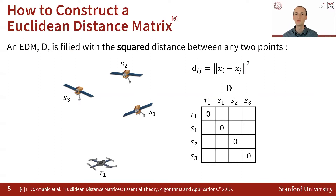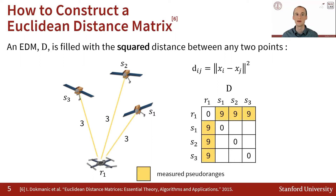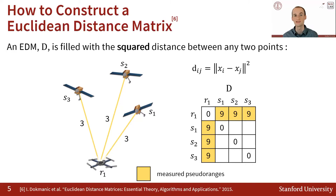First, we can fill in the diagonal with zeros, representing the fact that the distance is zero between any point and itself. We can fill in the leftmost column and topmost row with the squared values of the measured pseudoranges between the receiver and each satellite. In this simple example, we will say that each distance has a value of three units, so we add three squared to the EDM in the appropriate locations.